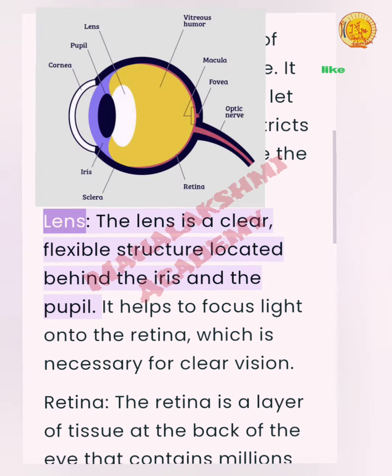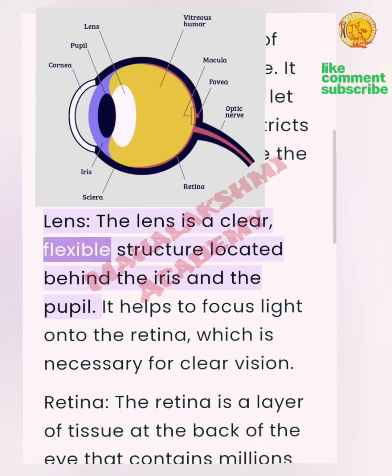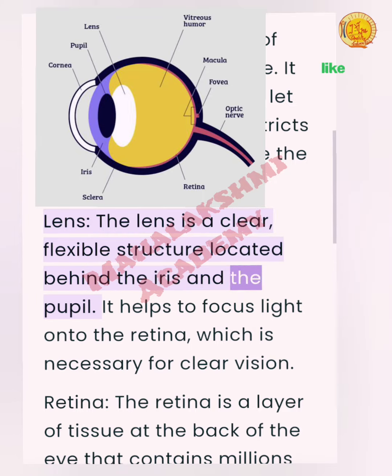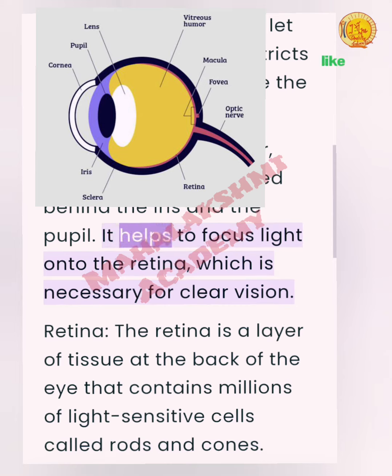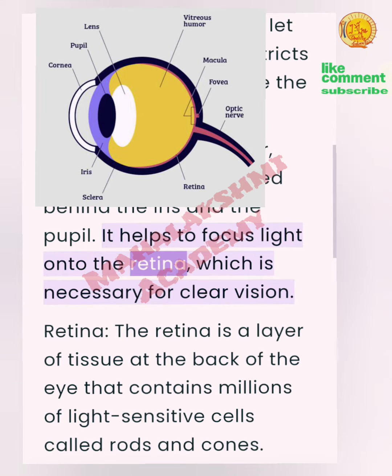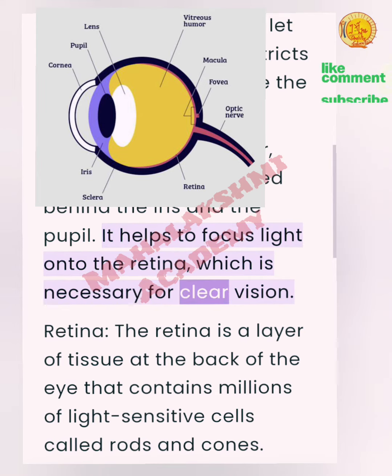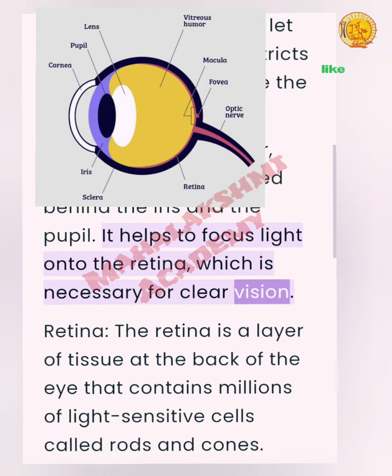Lens: The lens is a clear, flexible structure located behind the iris and the pupil. It helps to focus light onto the retina, which is necessary for clear vision.